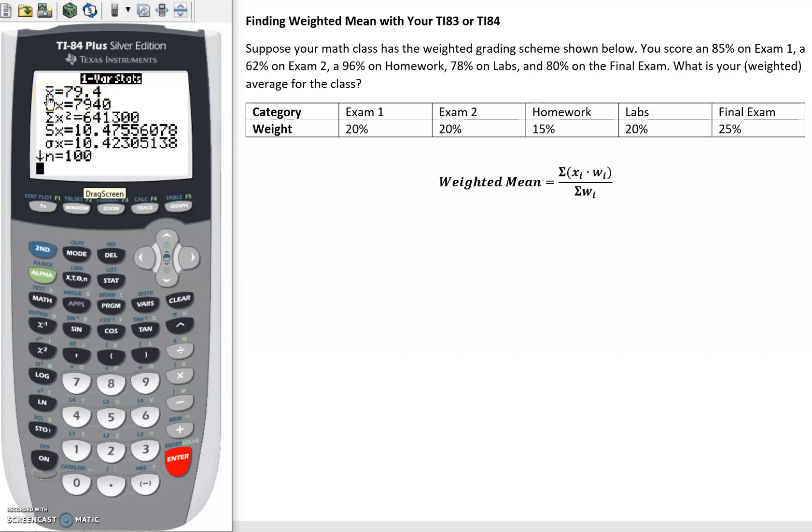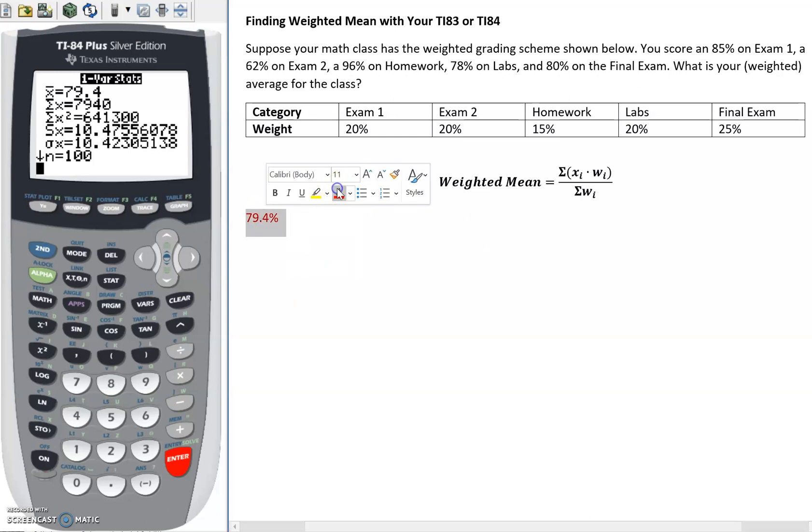But in this case, since we added a frequency list, it's a weighted average. So 79.4% would be our current average for the class. And hopefully we get bumped up to that 80%.